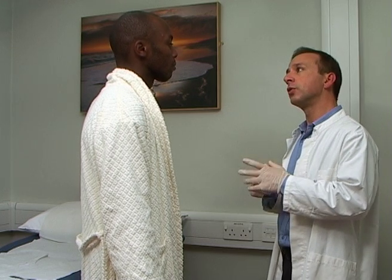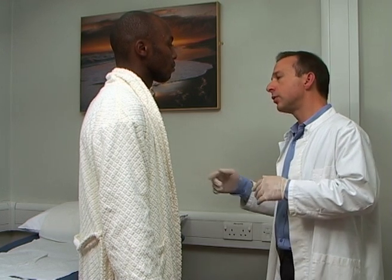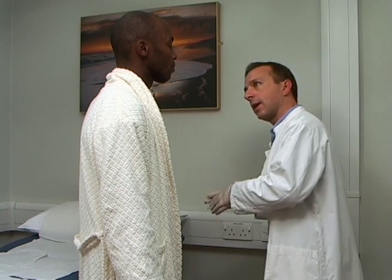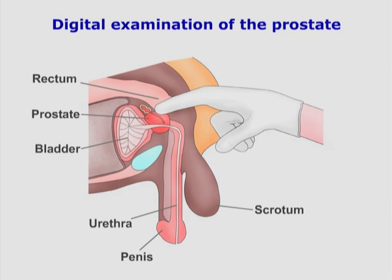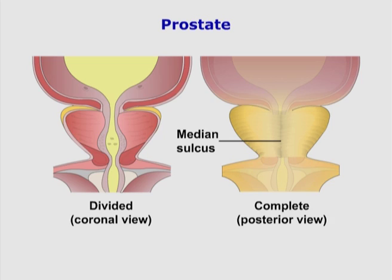Explain the procedure to the patient and ask for his consent. A normal prostate should be rubbery, non-tender, and uniformly round, except for the median sulcus, which divides the two lobes.